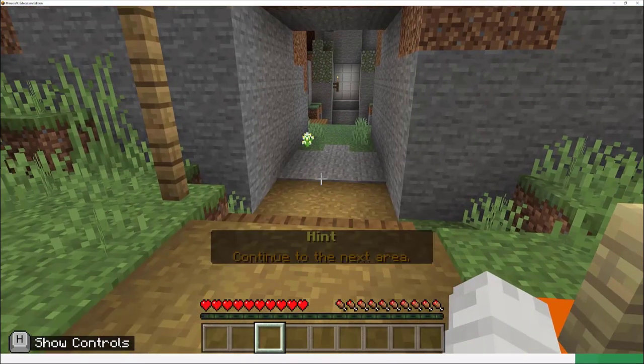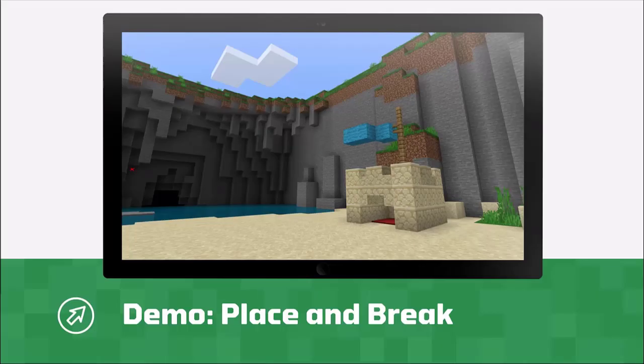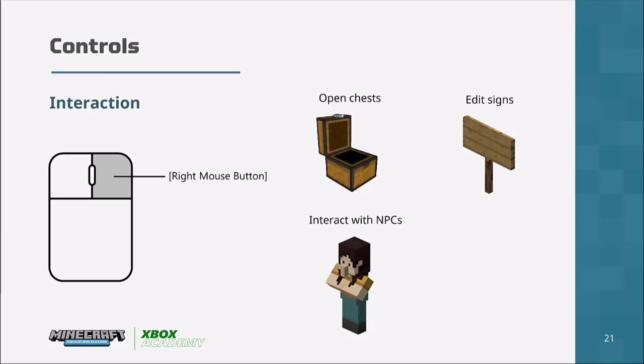Once you've mastered movement and place and break, the final thing you need to master is interaction. There are several things you can interact with in Minecraft: chests, signs, switches, buttons, and also NPCs — and we'll talk about NPCs shortly.